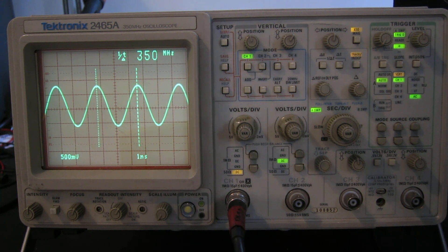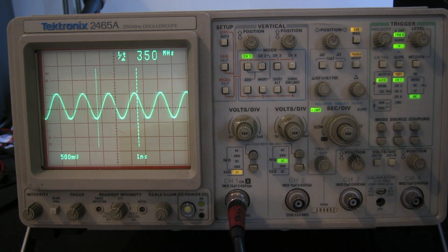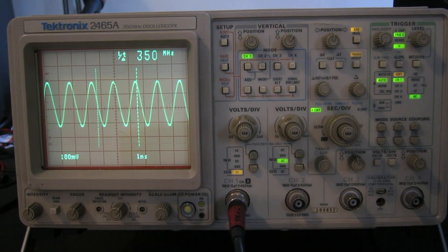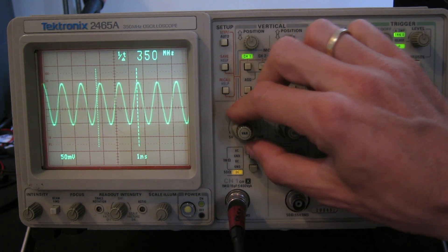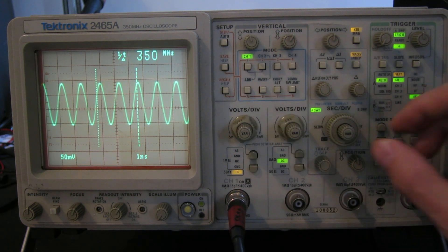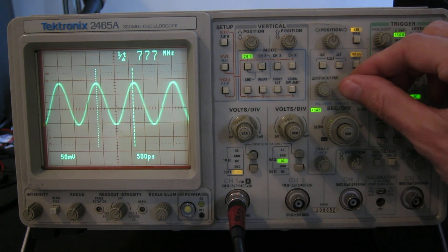But if I go up 450 megahertz, still working, 550 megahertz, 650 megahertz. Amplitude's dropped off a bit. We'll bring it back up. 650, 750, we've lost it, but we can increase the sensitivity. And we've still got a trace, that's 750 megahertz. I'll measure it. There you go. 750.